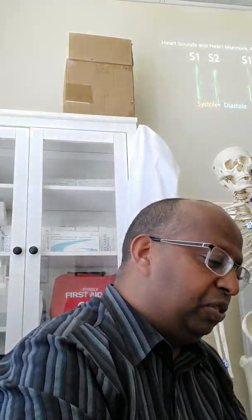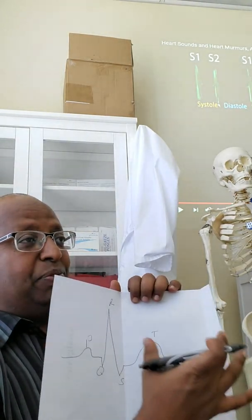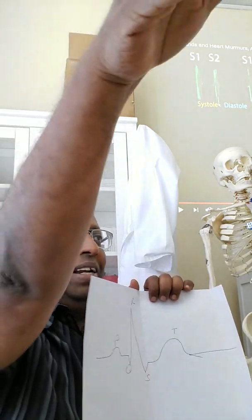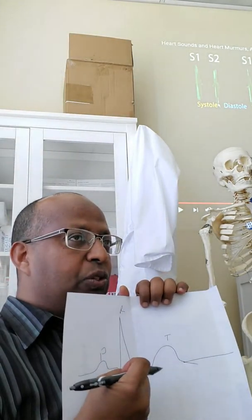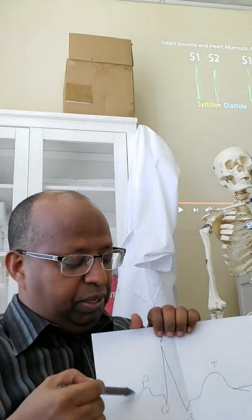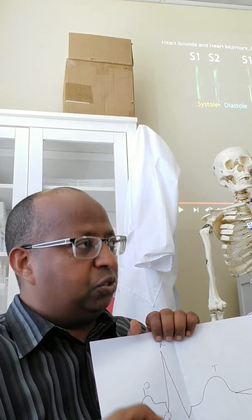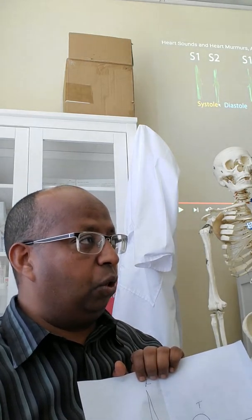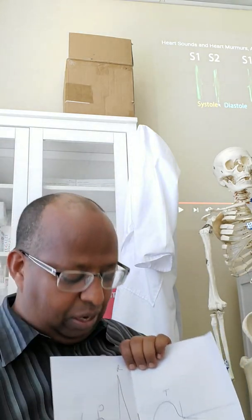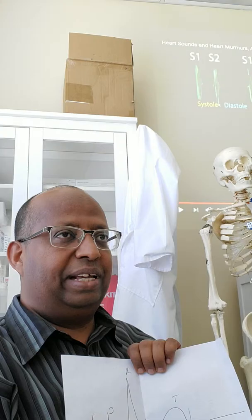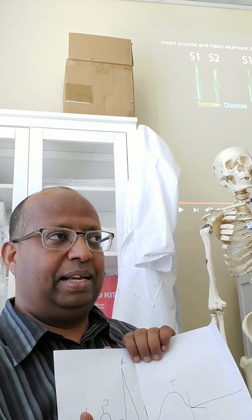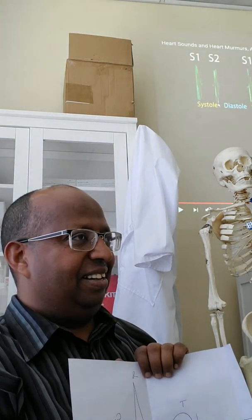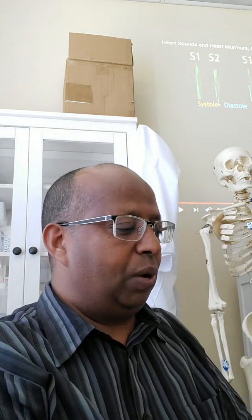One cardiac cycle means one heartbeat, from S1 to the next S1 — during this phase the heart contracts and relaxes. The P wave shows contraction of the atria; the QRS shows contraction of the ventricles; and the T wave shows relaxation. So from here to here is systole, and from here to here is diastole.